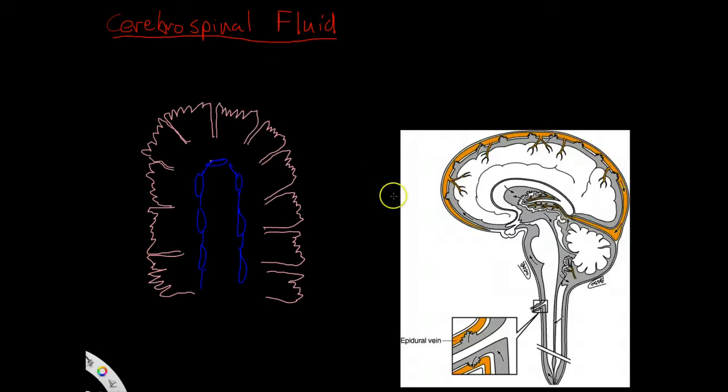Here on the right side of the picture, you see a lateral view of the brain, and you can see the ventricles exposed. You can see the lateral ventricle here, the third ventricle, the aqueduct of Sylvius here, and the fourth ventricle here.